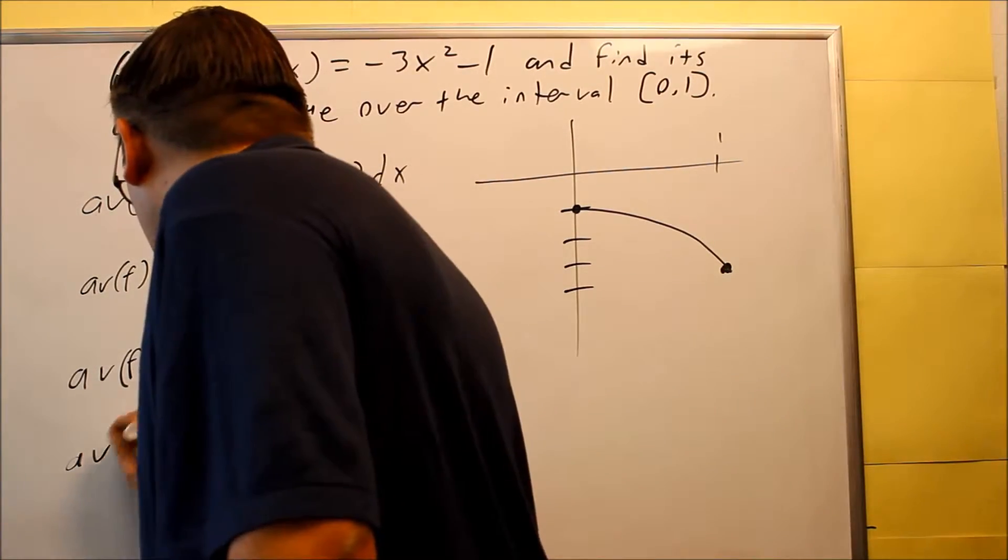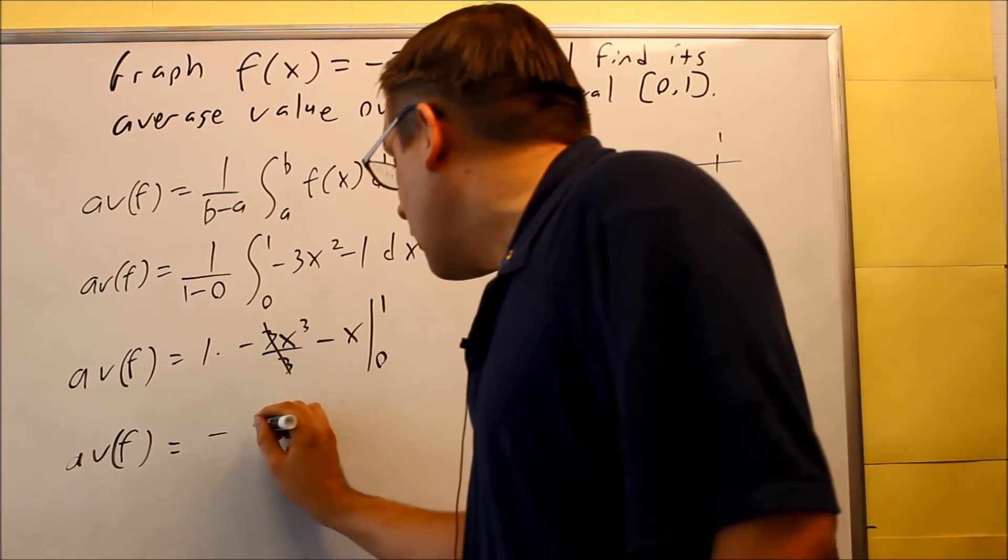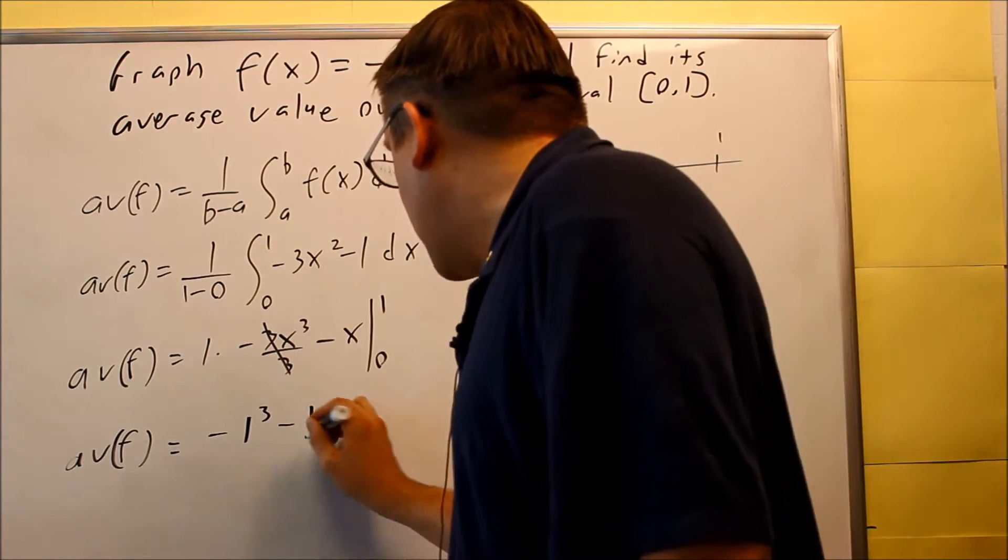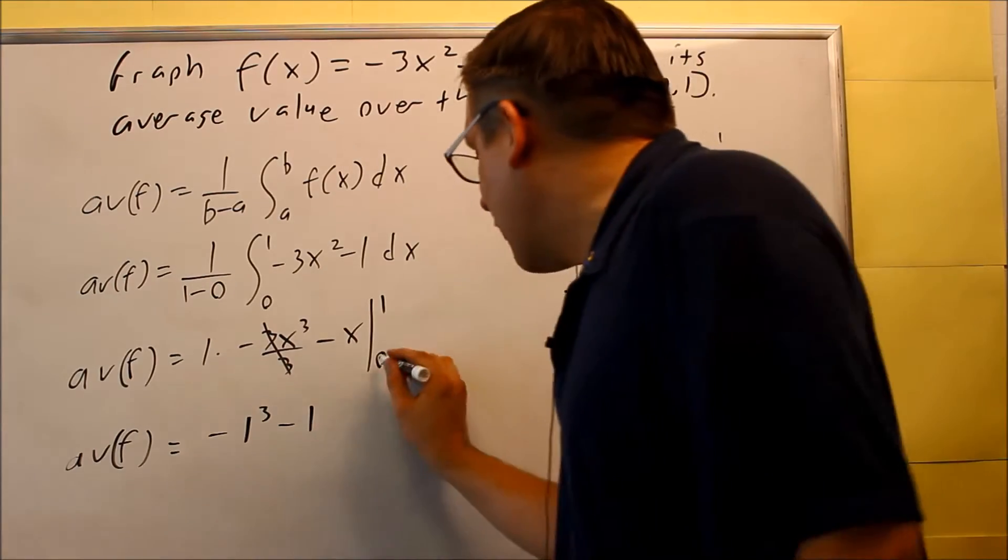So the average value function is going to be, okay, so I have negative 1 cubed, then minus 1. And then if I put 0 in there, I'm just going to get 0 for both of those, I don't need to show that.